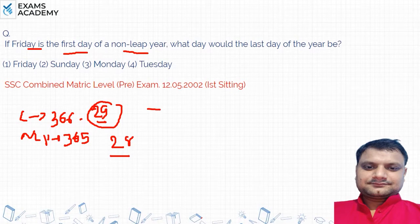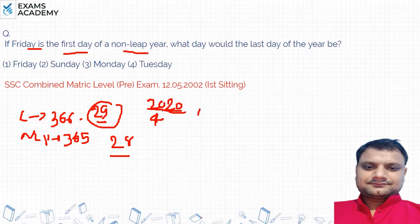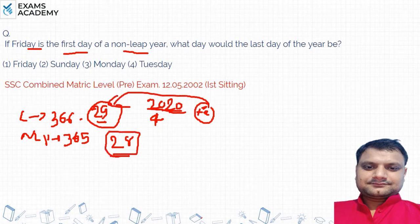If any year is divisible by 4, it is a leap year. In a leap year, February has 29 days, so the total is 366 days. In a non-leap year, February has 28 days, giving 365 days.